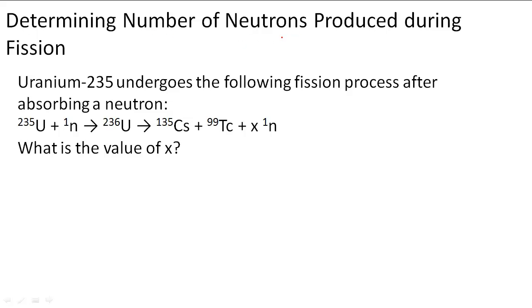Determining number of neutrons produced during fission. In this problem, uranium-235 undergoes the following fission process after absorbing a neutron.